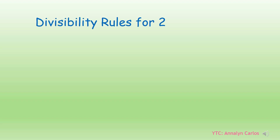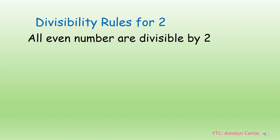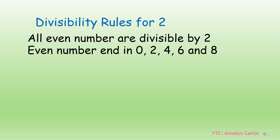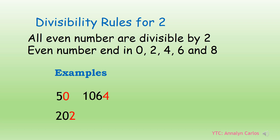To begin our lesson, let us first discuss the divisibility rules for 2. All even numbers are divisible by 2 — even numbers that end in 0, 2, 4, 6, and 8. For examples, we have 50, 202, 1064, 326, and 68. Since these numbers end in even digits like 0, 2, 4, 6, and 8, we can say that these numbers are divisible by 2.